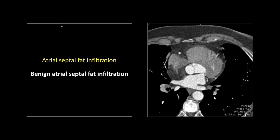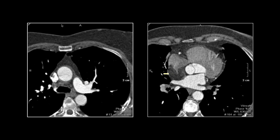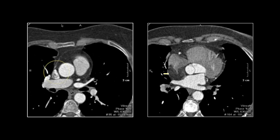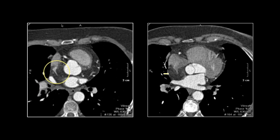All right, so you can see I've got these divided anatomically, and we'll start with septal abnormalities. This one just has to be called out. It's not that exciting because it doesn't result in symptoms and requires no treatment, but there it is. Unbelievable atrial septal fat infiltration. This can be really striking, and it can be to such a point that you can't believe it's normal.